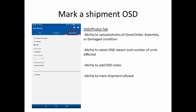The shipment screen also gives you the ability to mark a shipment OSD or take various other photos of freight. You can take received in good order photos, assembly photos, or OSD photos. Also on this screen, you can select an OSD reason, specify the number of units affected, and enter additional OSD notes.